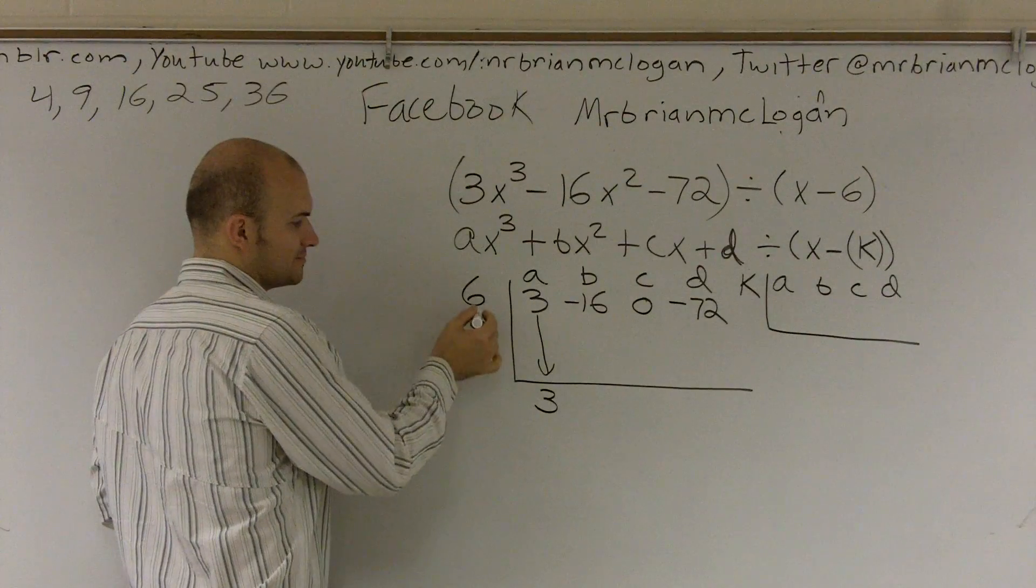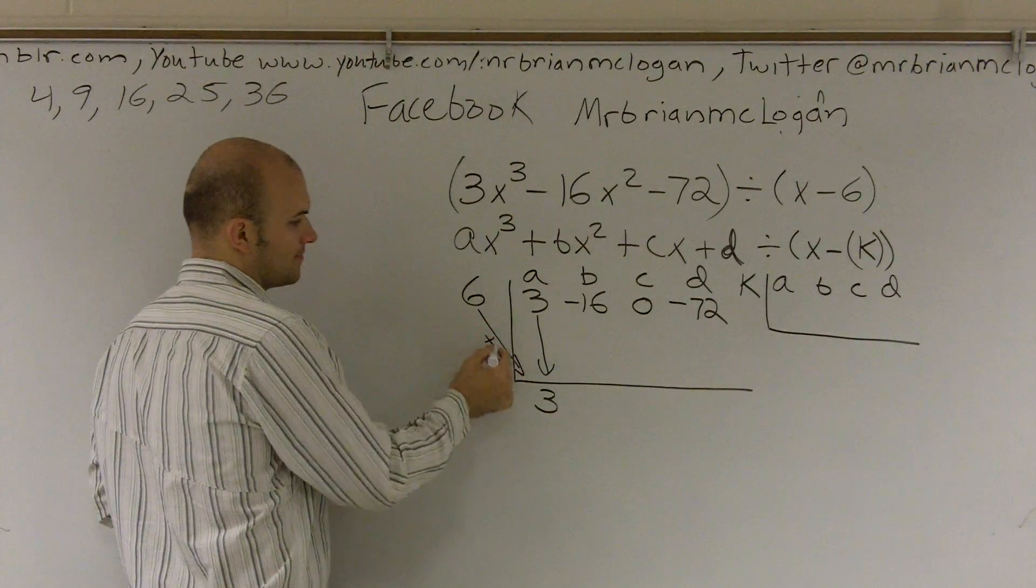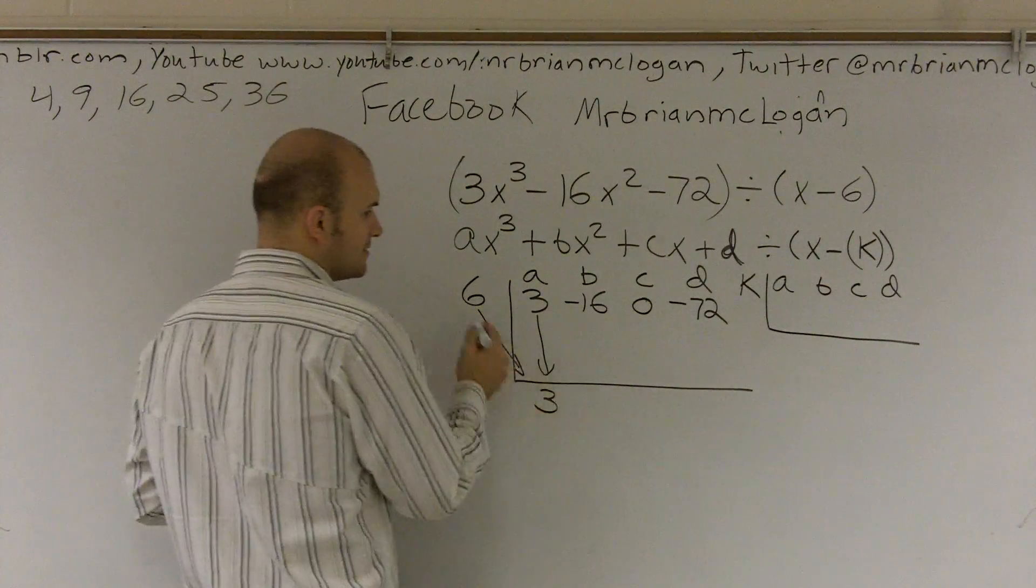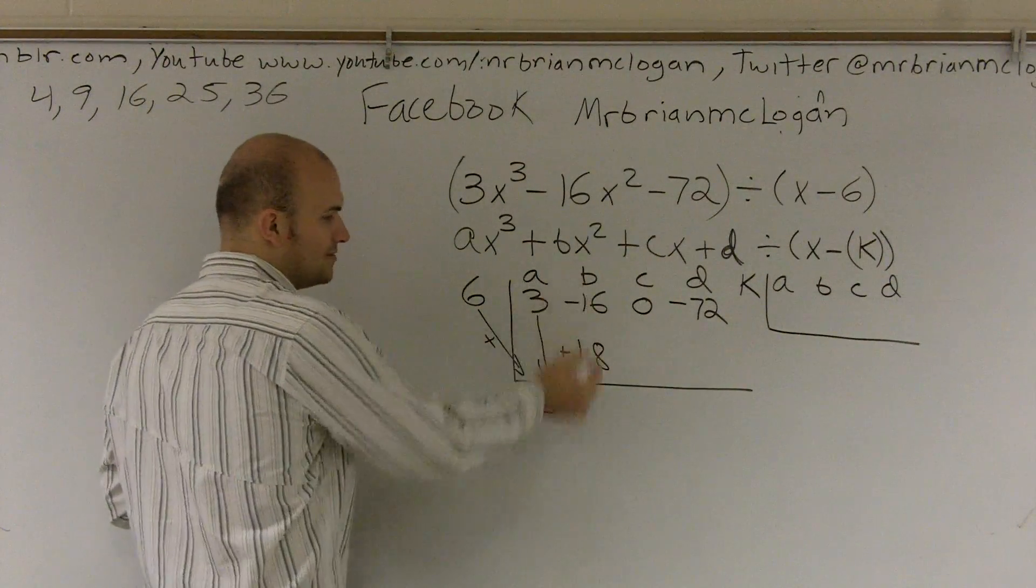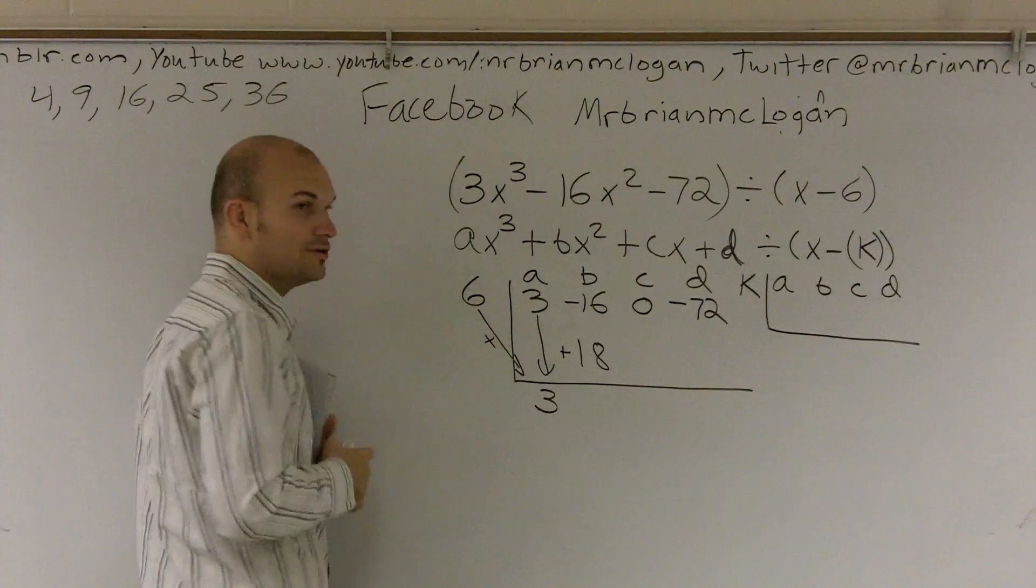Then you take your 6, and you multiply it. 6 times 3 gives you 18. Then these two, you add. So when you go down, you add. When you go diagonal, you multiply.